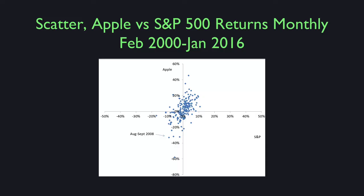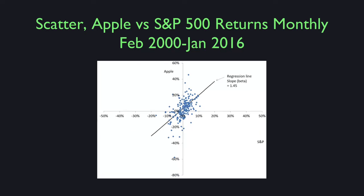I showed you last time a scatter diagram, which had on the horizontal axis the return on the stock market, and on the vertical axis the return on Apple computer. There was a scatter of points, one for each year — the return on the market and the return on Apple for that year. I had fitted a line through that scatter of points, and the slope of the line is called beta.